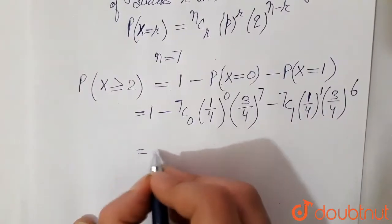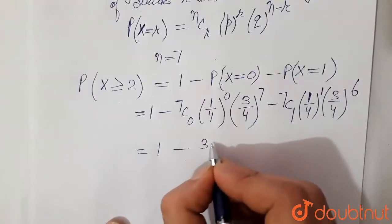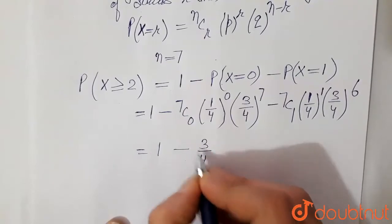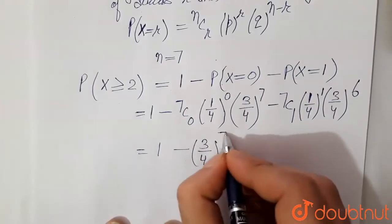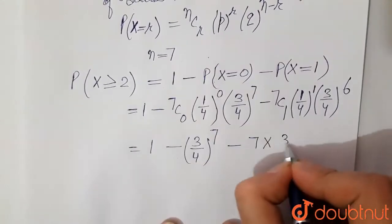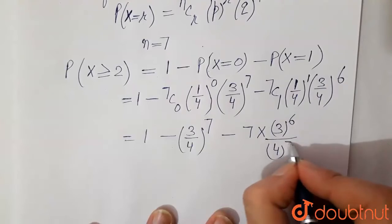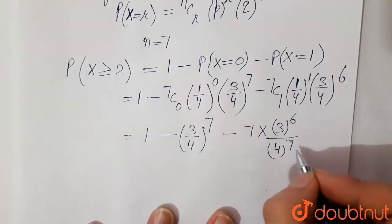Now we will solve it. This becomes 1 minus 3 to the power 7 and 4 to the power 7 in denominator, and this becomes 7 into 3 to the power 6 divided by 4 to the power 7 in the denominator.